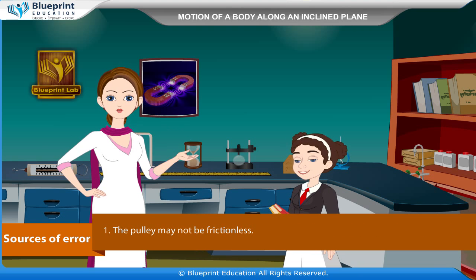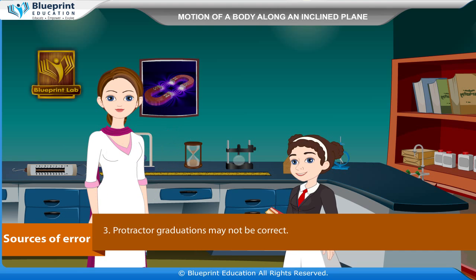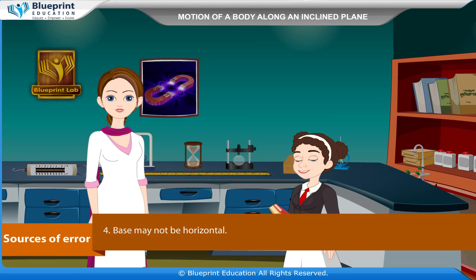Sources of error: The pulley may not be frictionless. Spring balance may not be accurate. Protractor graduations may not be correct. Base may not be horizontal.